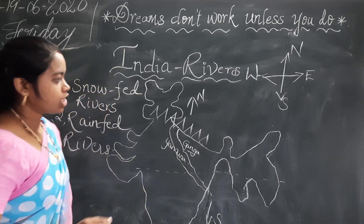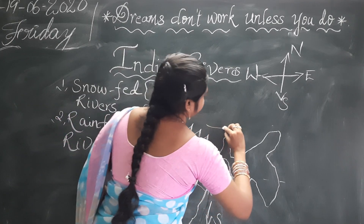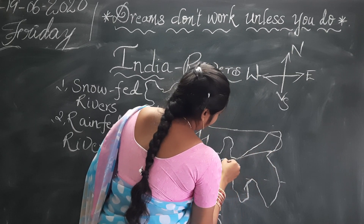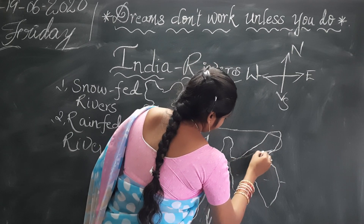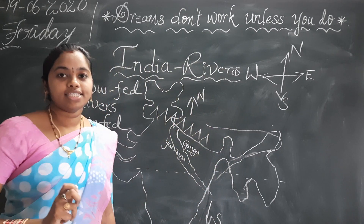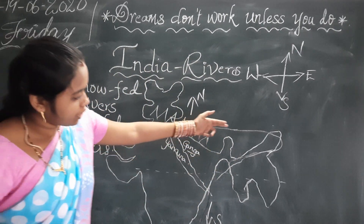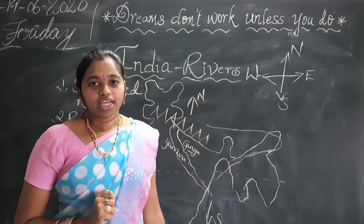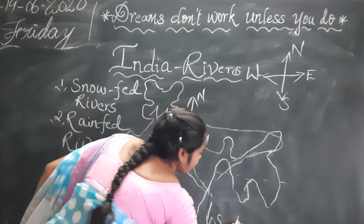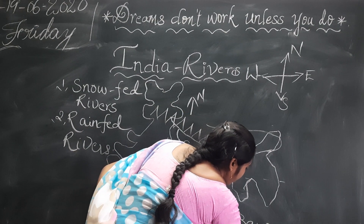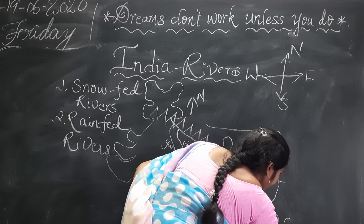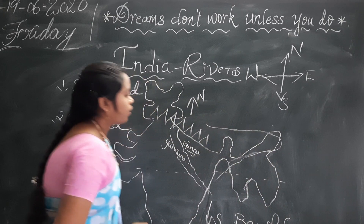The next one is Brahmaputra. This Brahmaputra originates in Tibet. It enters into Arunachal Pradesh and then drains into the Bay of Bengal.